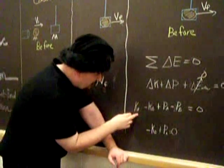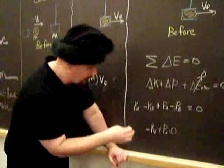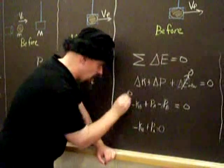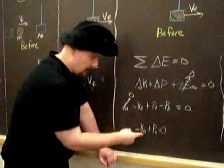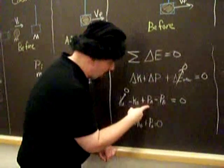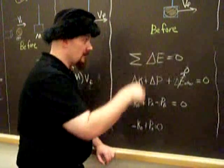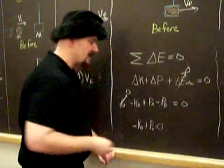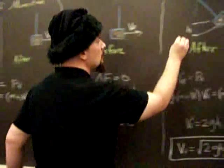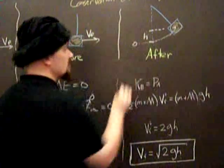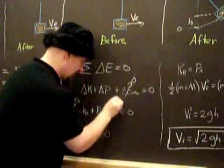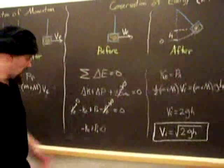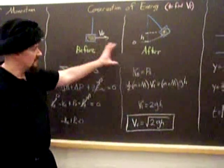For each piece, the kinetic energy afterwards, well, the pendulum is stationary, so that's zero. Kinetic energy before, we must keep that. The potential energy afterwards, that's the m g h at its height h. We need that. But the potential energy before, we'll conveniently call this initial height zero. So, we get this, which gives us this.